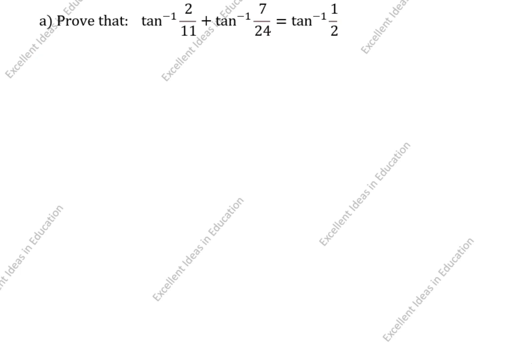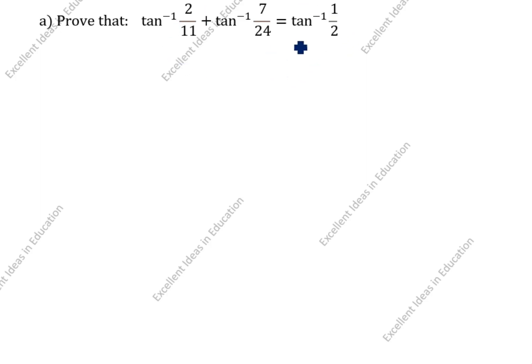Hi friends, welcome to my channel, Excellent Ideas in Education. Today we are going to solve this problem. This is inverse trigonometric function class 12. Prove that tan inverse of 2 by 11 plus tan inverse of 7 by 24 is equal to tan inverse of 1 by 2. We will solve this by showing LHS equal to RHS.